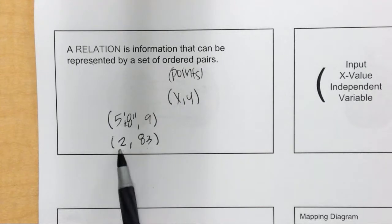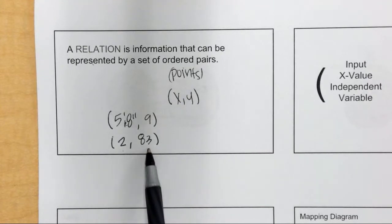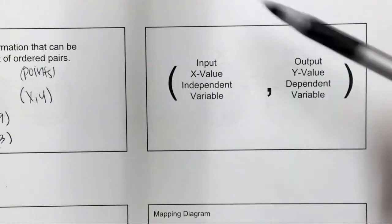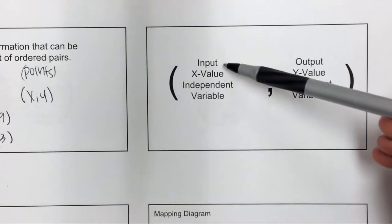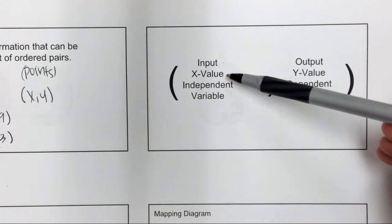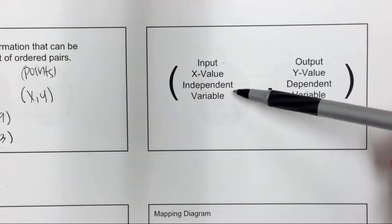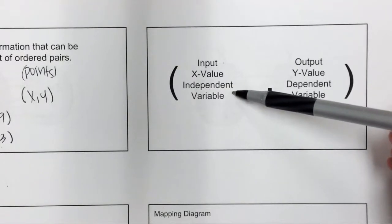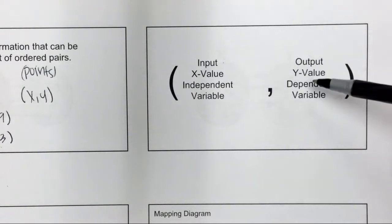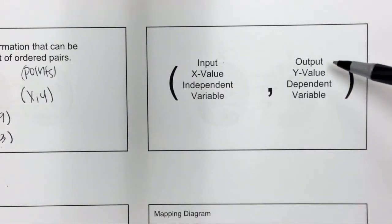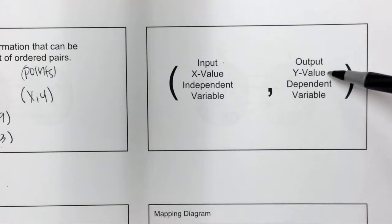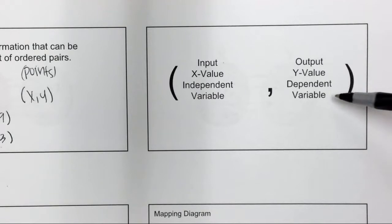The points, the first value and the second value have different names. The first value we call the input, which is the same thing as an x value, which is the same thing as the independent variable. The second value is the output, which is the same thing as the y value, the dependent variable.